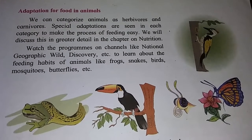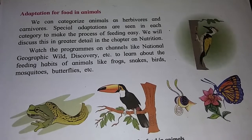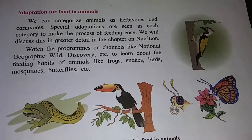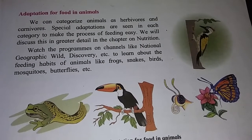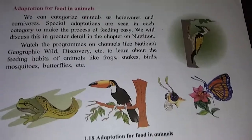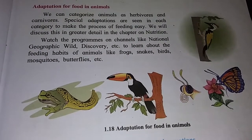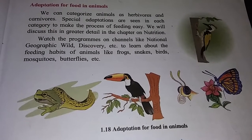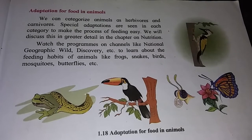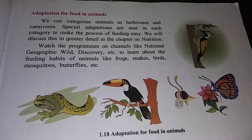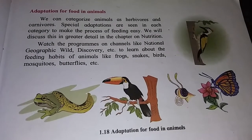For foods in animals, adaptation for food depends on food habits. Animals can be divided as herbivores, carnivores, omnivores, and parasites. Herbivores are animals which eat plants. Their front teeth are sharp and flat, and back teeth are strong. For example, horse, cow, deer, and rabbit.